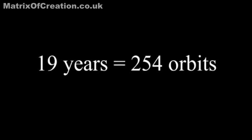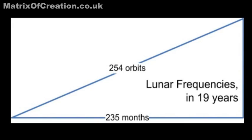In fact the Moon has completed 254 orbits in 19 years. Since the Sun is also illuminating the Moon in the same way, its phase 19 years later must equal 254 minus 19 lunar months — that is, there are 235 months in 19 years.